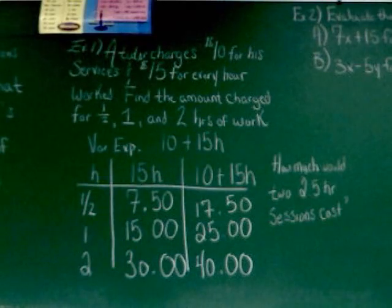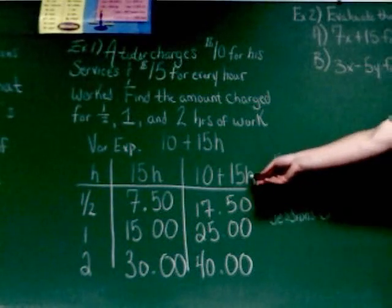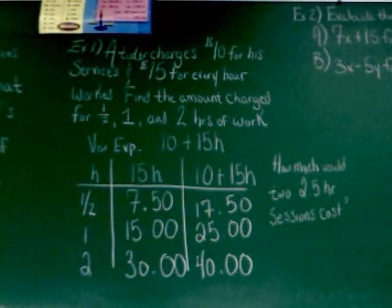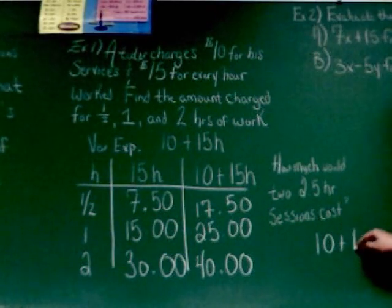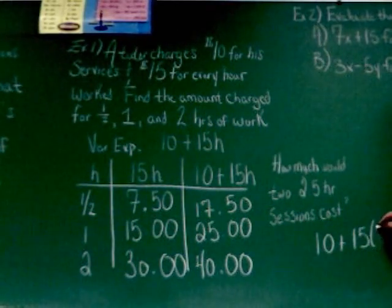All right. So, we've got the expression ten plus fifteen H. In this problem, what is H going to become? Two point five. Two point five. Good. So, I've got to do ten plus fifteen times two point five.